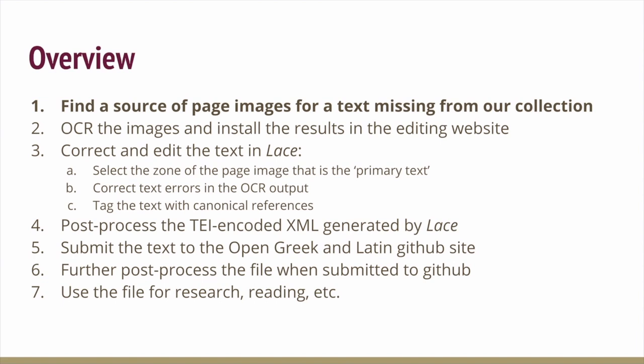To do this, we need a set of images of a book, and it needs to be in the public domain. Since we want to include as many jurisdictions as possible, we probably should use public domain in the United States, which means a publication date of 1925 or later. Image sets can be found online at places like archive.org, HathiTrust, Google Books, and elsewhere. But if image sets aren't available there, contributors can scan books from their libraries.